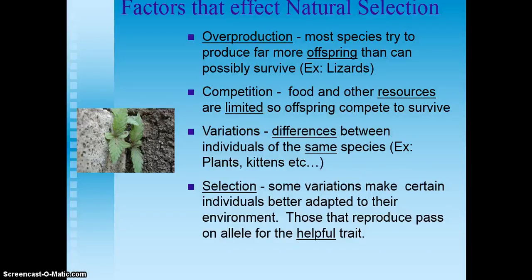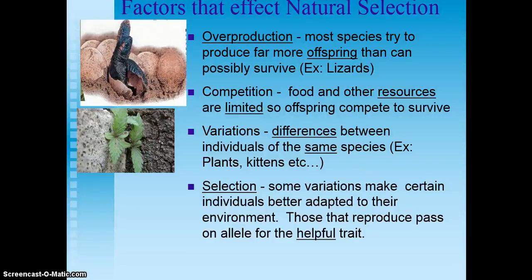There are a number of factors that affect natural selection. The first is overproduction: most species produce far more offspring than could possibly survive — lizards, mites, and rabbits, for example. The second is competition: food and other resources are limited, so offspring compete to survive.